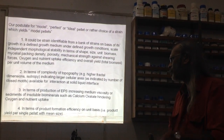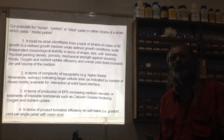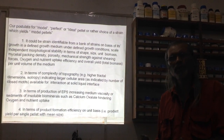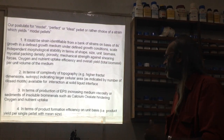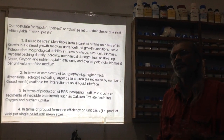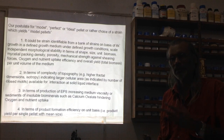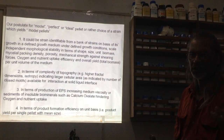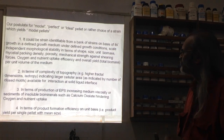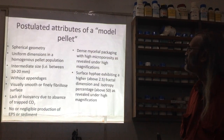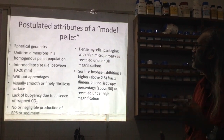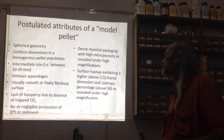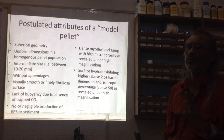Product formation efficiency is very important — whether the product is a primary or secondary metabolite such as organic acid, enzyme, or polysaccharide. We must know the product efficiency per unit biomass. Based on the previous points, we have postulated certain attributes of what is known as a model pellet.